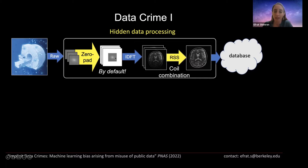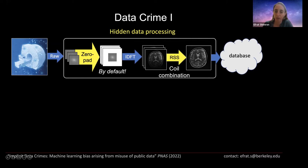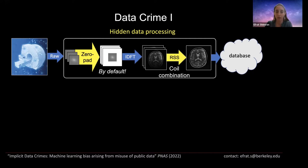Then the scanner applies the inverse discrete Fourier transform to get images from the data. Because we have multi-coil data acquired from an array of coils — essentially an array of antennas — the scanner applies some form of coil combination, often using the root sum of squares operation. The output is an image from the scanner. However, this is not the original image — it is interpolated because of the zero padding, and it is also magnitude-only. MRI data is complex valued — every number has a real part and an imaginary part. But after this pipeline, the image has only magnitude values due to the root sum of squares operation. This image has already been preprocessed.